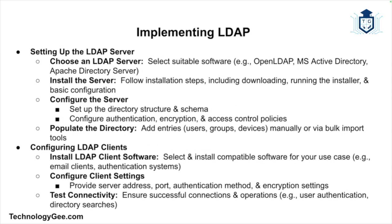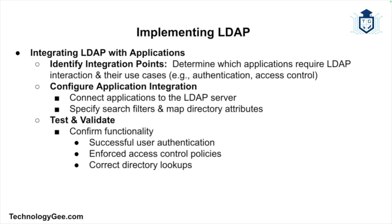Next, configure the LDAP client by choosing and installing LDAP client software that supports your applications — common clients include email clients, authentication systems, and network management tools. Configure the client settings to connect to the LDAP server by specifying the server address, port, authentication method, and any necessary encryption settings. Then test the connectivity to verify that the client can successfully connect to the LDAP server and perform desired operations such as searching for directory entries and authenticating users.